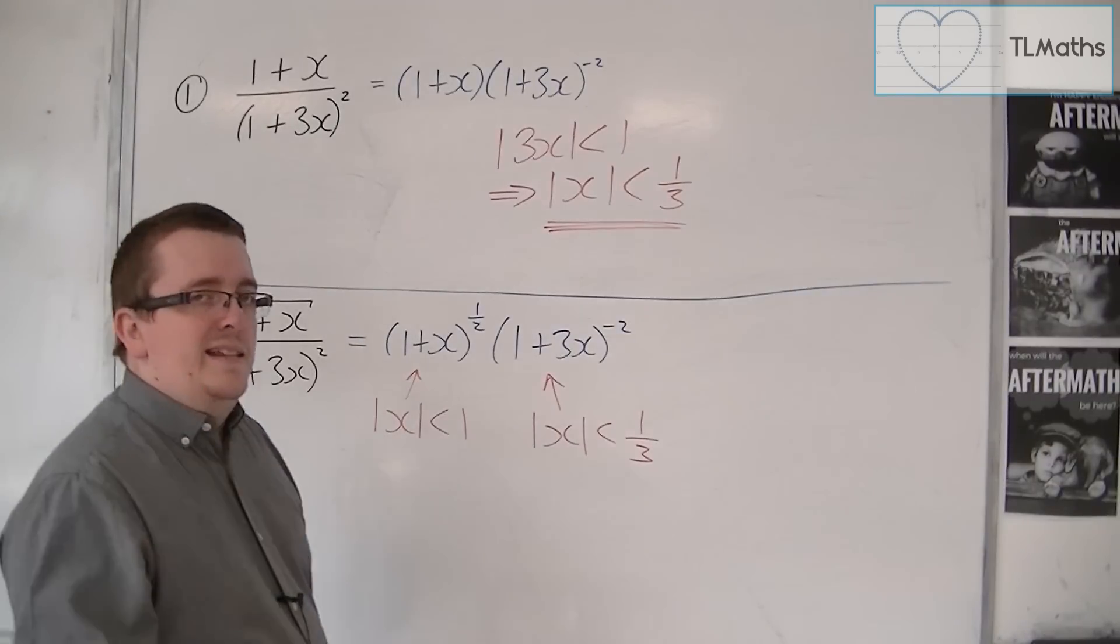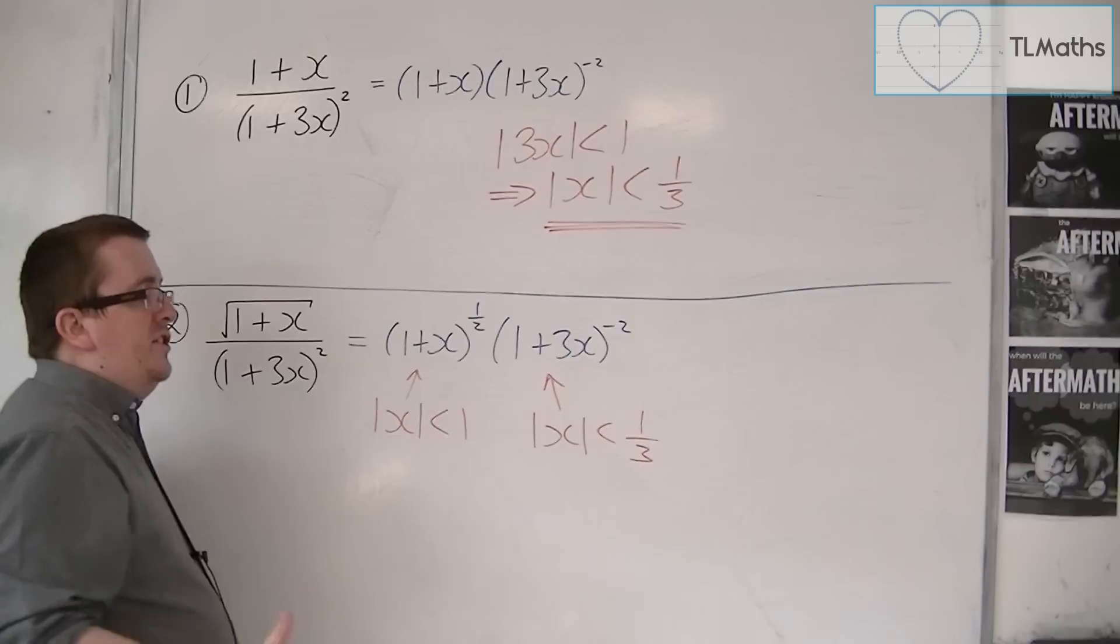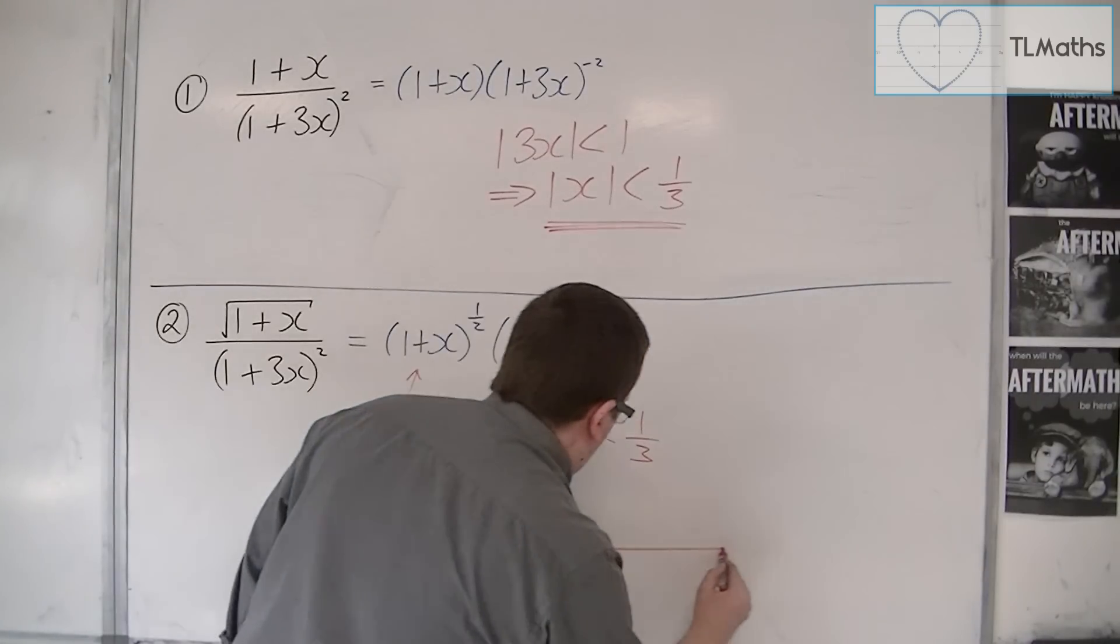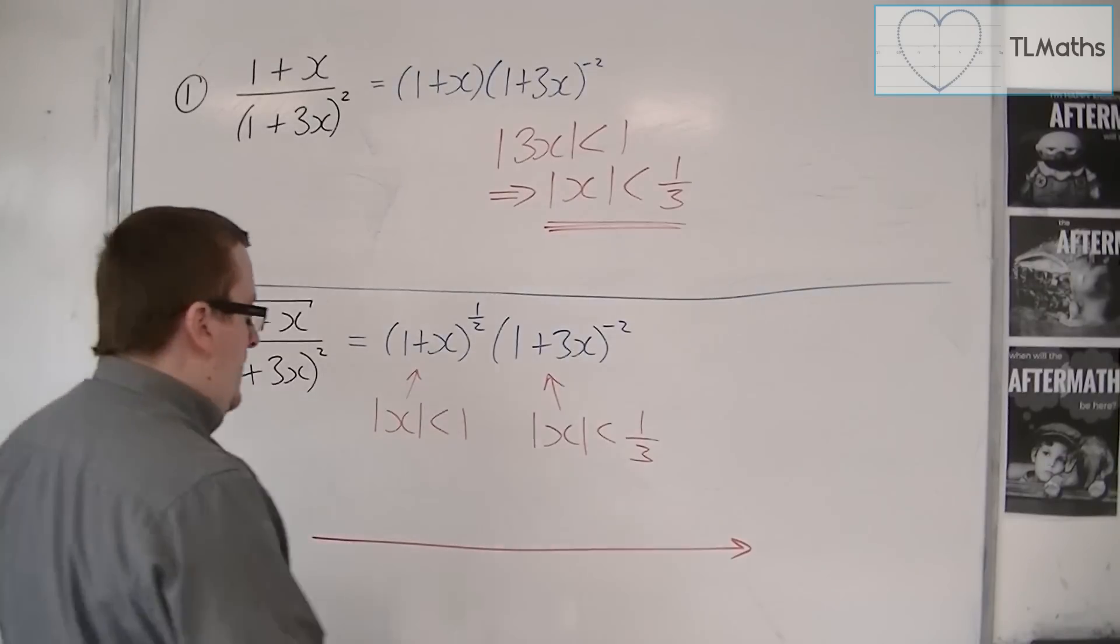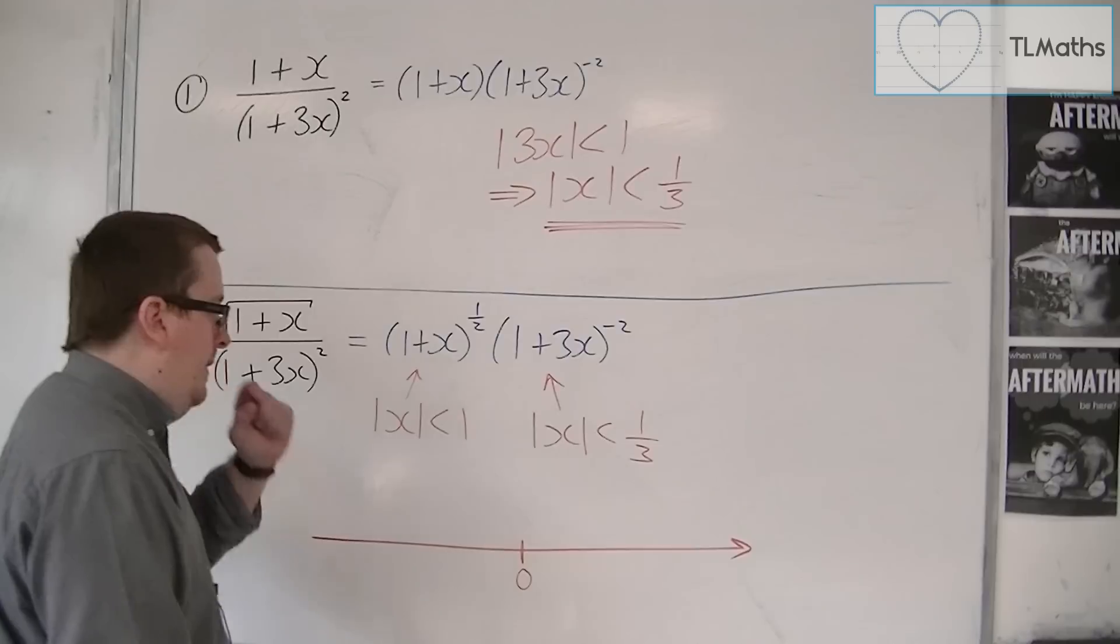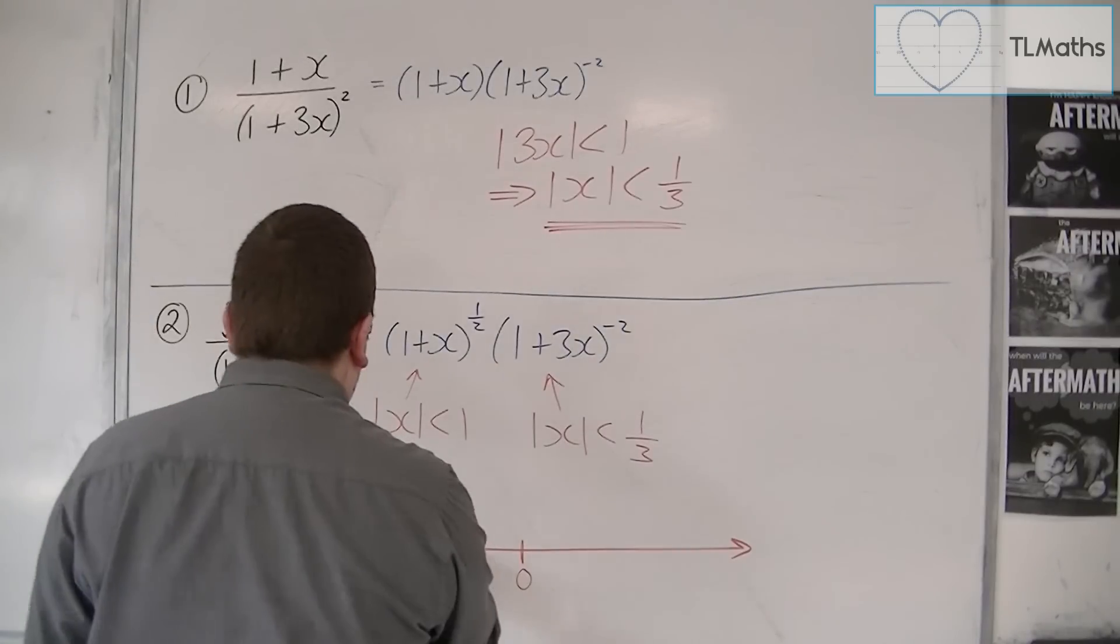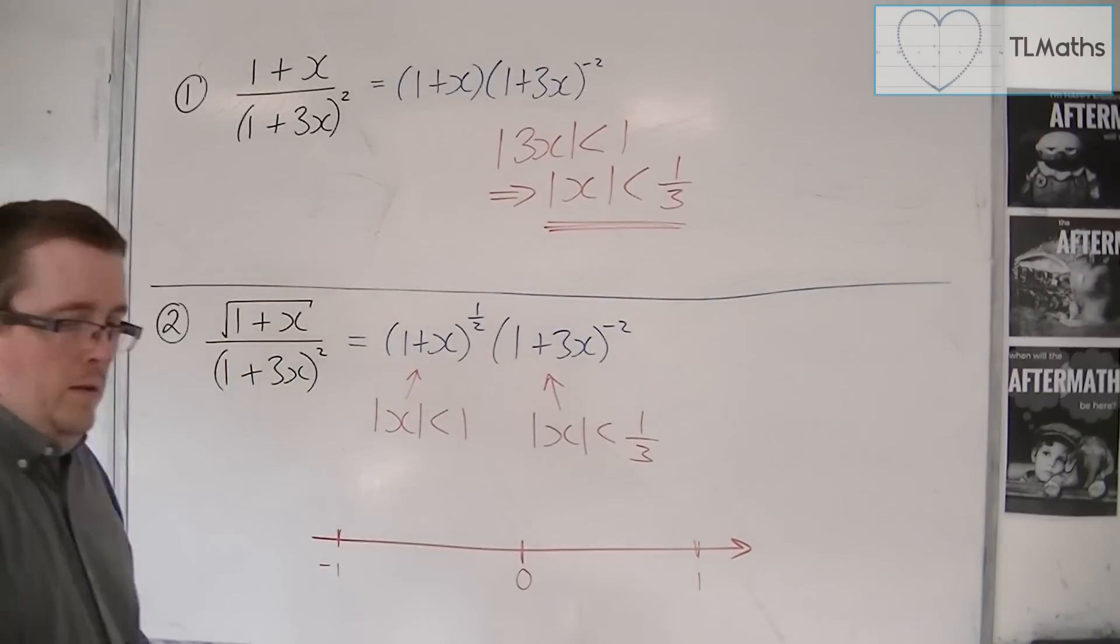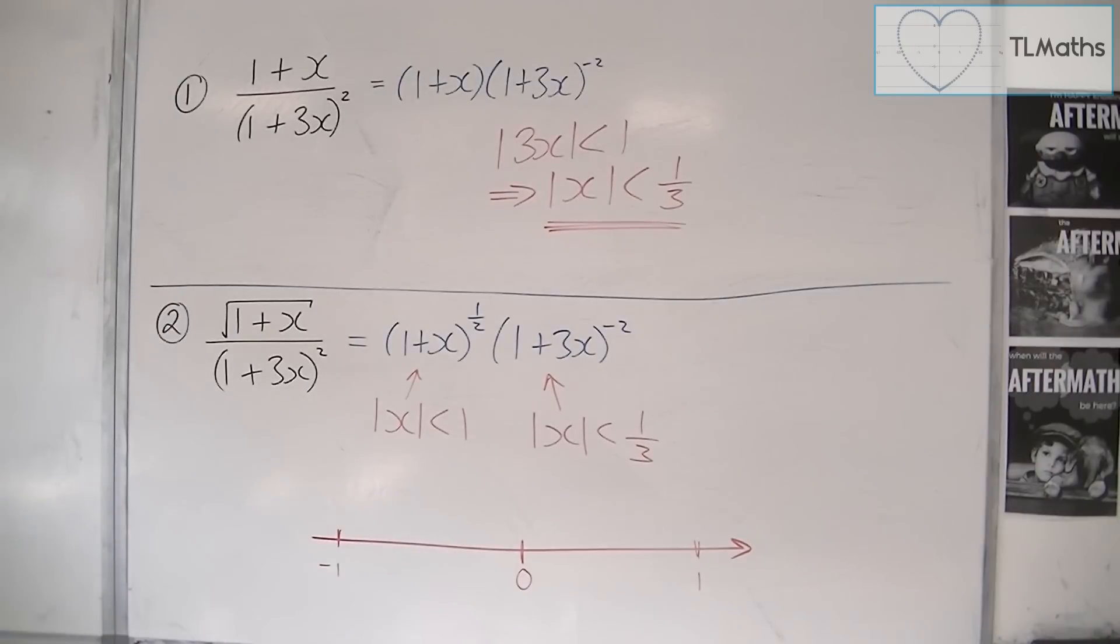So the way to consider which one is correct is to look at a number line. So here is 0, and then here is minus 1, and here is 1. So let's get some different colours for this.